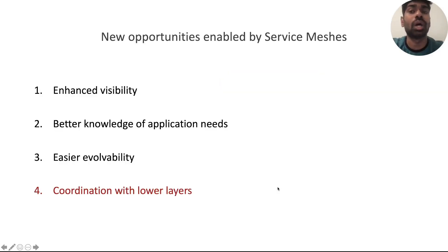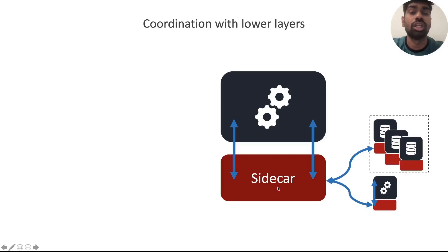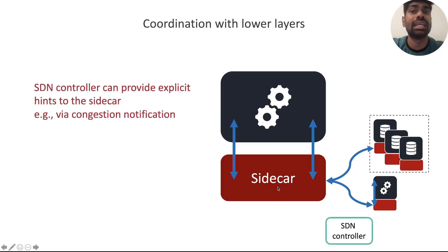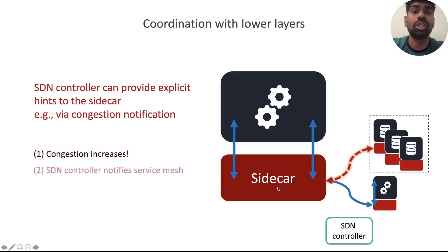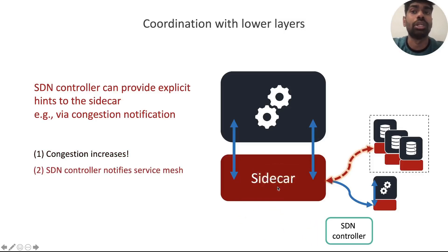Finally, we also identify an opportunity to coordinate explicitly with the lower layers. Just as service meshes can benefit from knowledge of application needs, the app itself can benefit from knowledge of the lower layers. For example, an SDN controller could provide explicit hints to the sidecar regarding the level of congestion. As you can see in this animation, as congestion increases, the SDN controller notifies the service mesh and the service mesh uses that information to reroute its traffic.